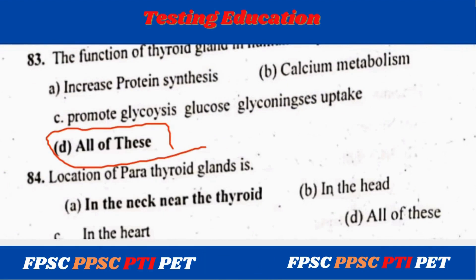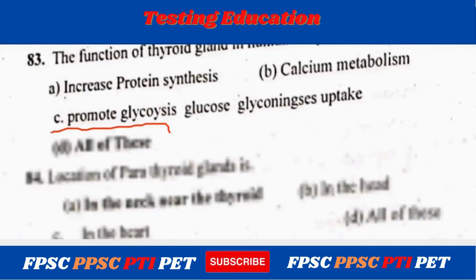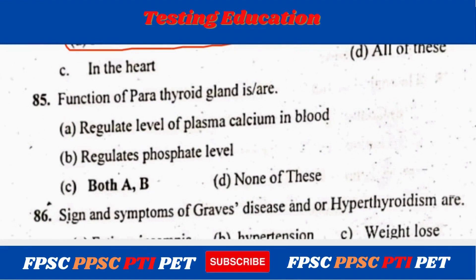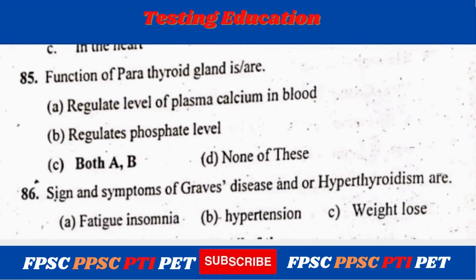The location of the parathyroid gland is in the neck near the thyroid. The function of the parathyroid gland is to regulate the level of plasma calcium in the blood and to regulate phosphate levels. Both A and B are correct answers.